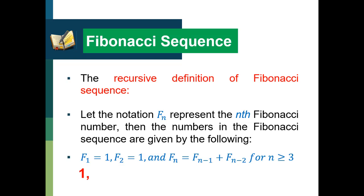The first term is 1, the second term is 1. The next term is 1 plus 1 equals 2. Then 1 plus 2 equals 3, then 2 plus 3 equals 5, then 5 plus 3 — wait — 3 plus 5 equals 8, then 5 plus 8 equals 13, then 8 plus 13 equals 21, then 13 plus 21 equals 34, and the pattern continues. See how easy the Fibonacci sequence is using the recursive definition — just adding the previous two terms.